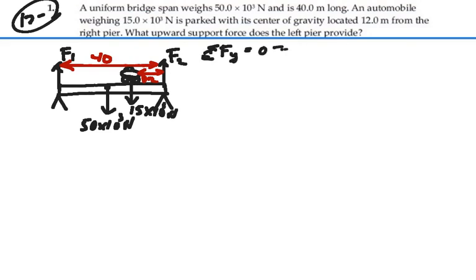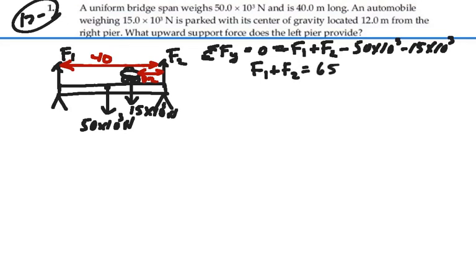And so then we would have F1 plus F2 minus 50,000 minus 15,000. So it's true that F1 plus F2 will equal 65,000 newtons. Nice to know, but we still don't get force F1 from this. We have two unknowns.